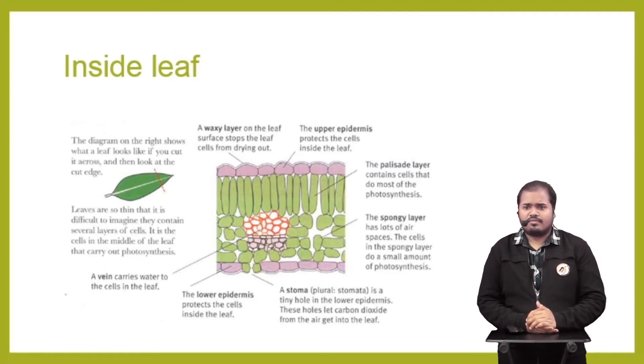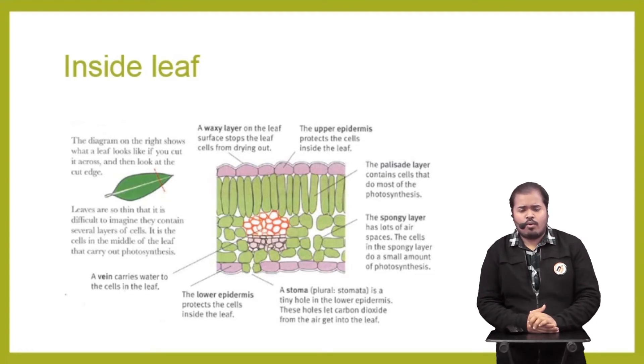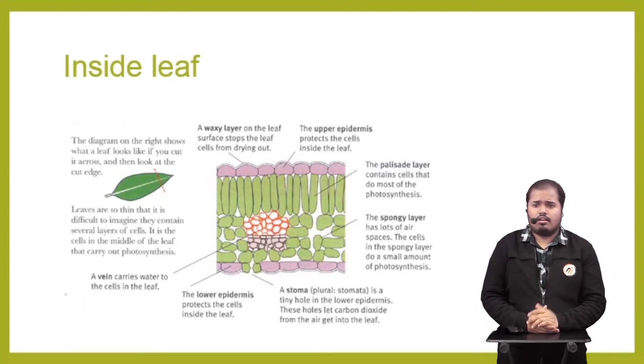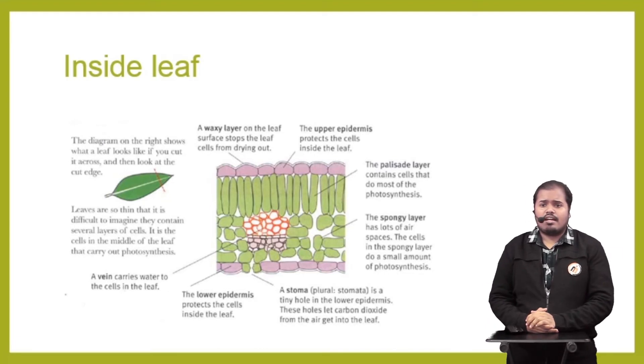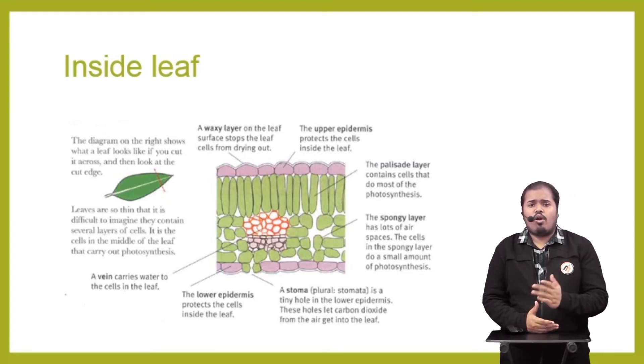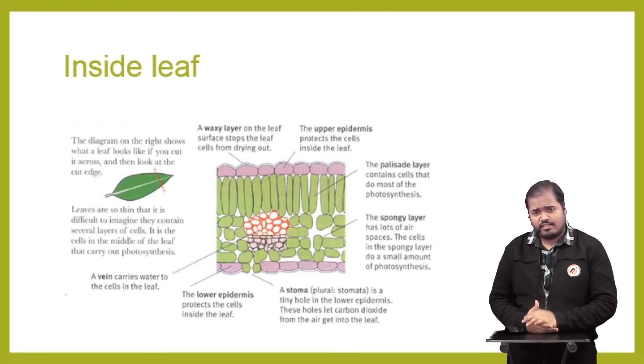At the end, at the lower epidermis, you can see stoma (in plural it's called stomata). It's a tiny hole, also known as a guard cell, where all sorts of gas exchange takes place.